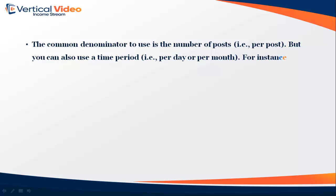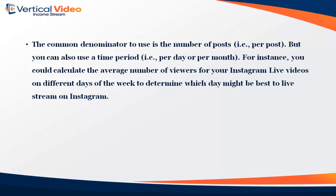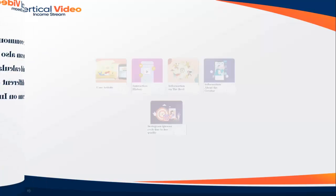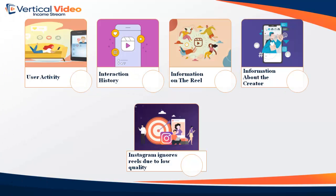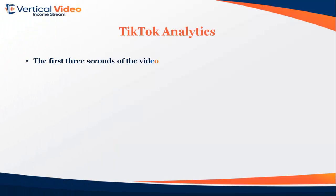The common denominator to use is the number of posts (i.e., per post), but you can also use a time period — per day or per month. For instance, you could calculate the average number of viewers for your Instagram Live videos on different days of the week to determine which day might be best to live stream. Note: Instagram ignores Reels due to low quality.